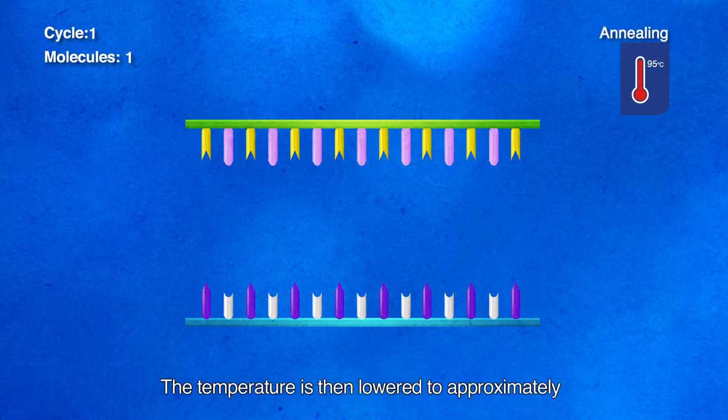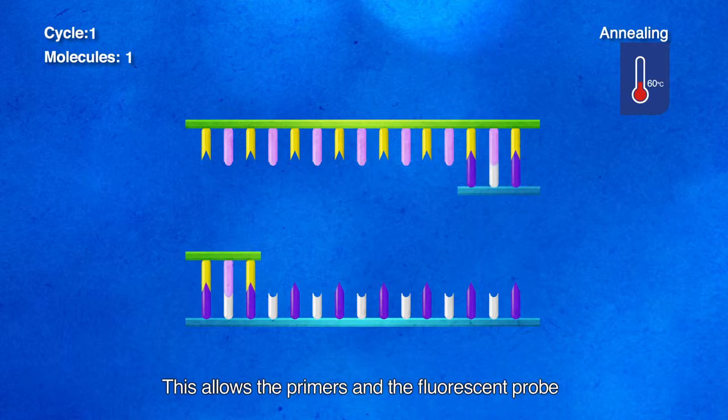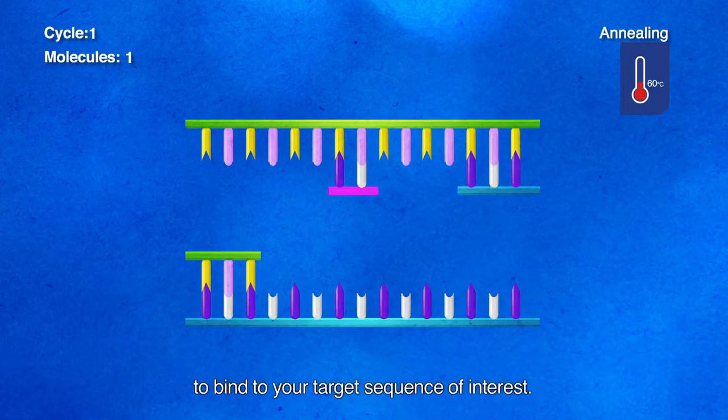Second, annealing. The temperature is then lowered to approximately 60 degrees. This allows the primers and the fluorescent probe to bind to your target sequence of interest.